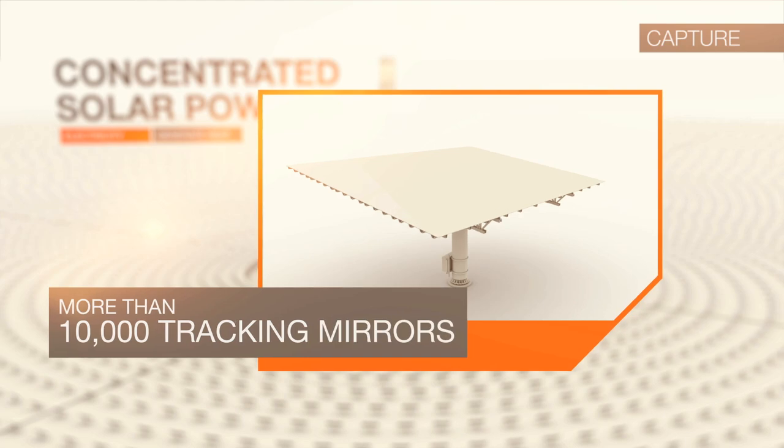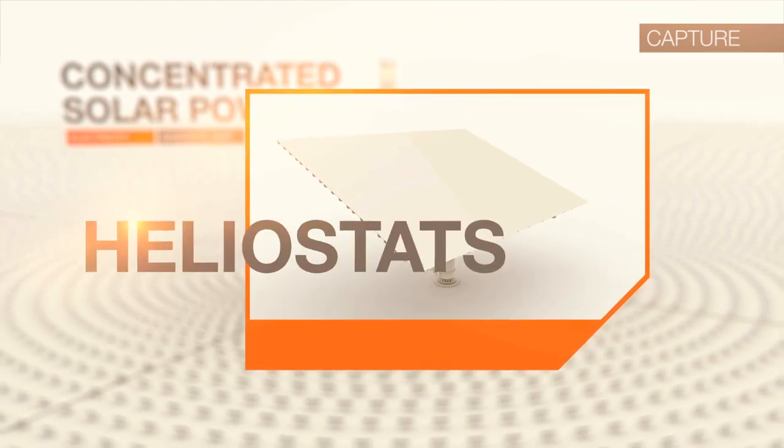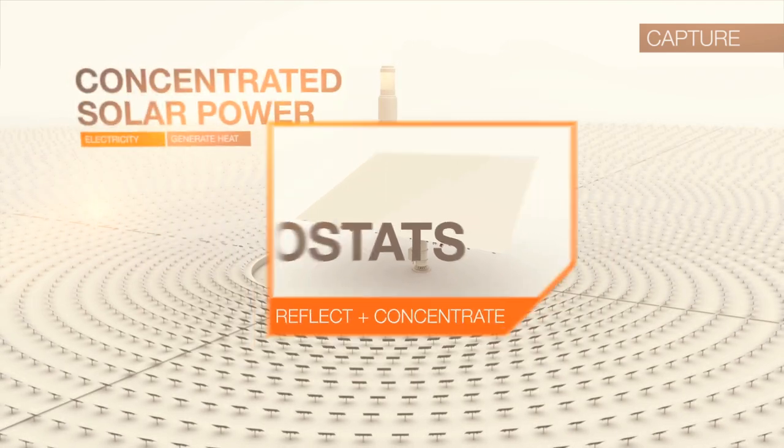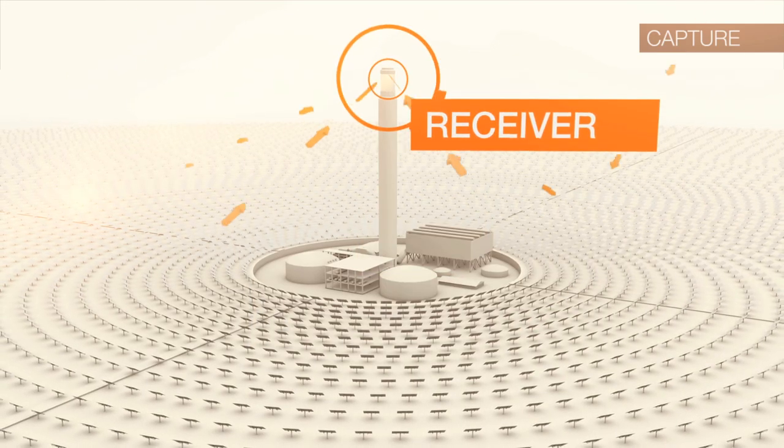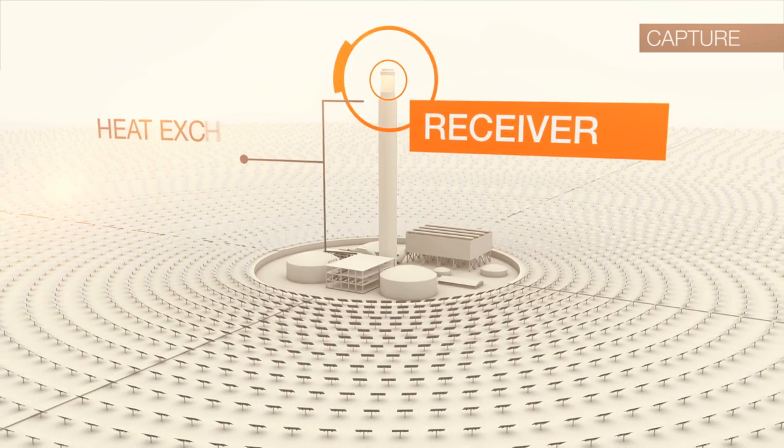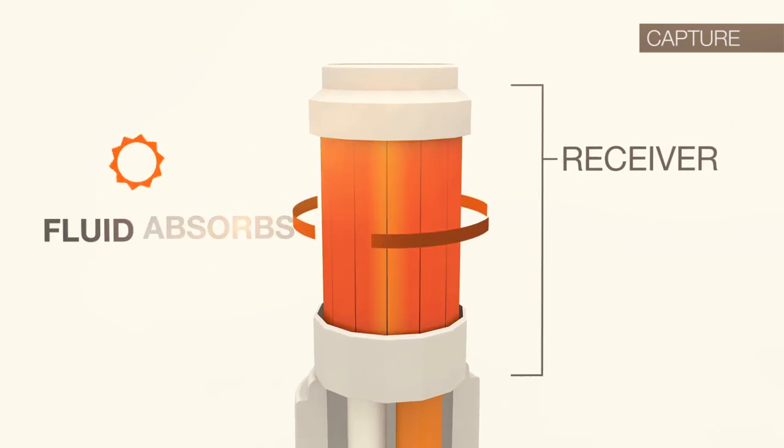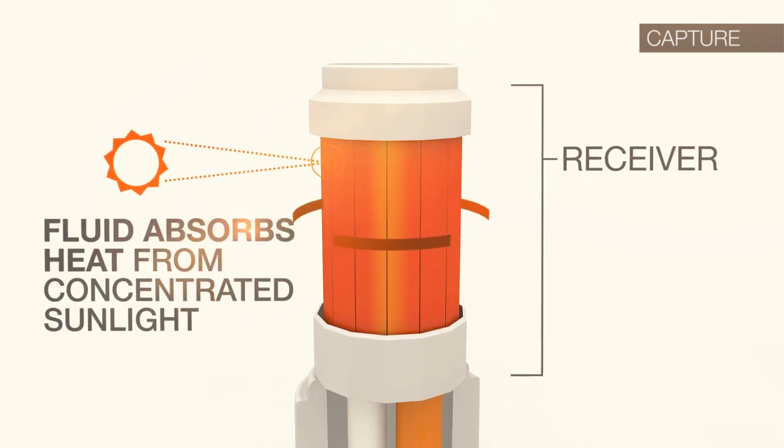More than 10,000 tracking mirrors called heliostats reside in a four square mile field where they reflect and concentrate sunlight onto a large heat exchanger called a receiver that sits atop a 550-foot tower. Within the receiver, fluid flows through the piping that forms the external walls. This fluid absorbs the heat from the concentrated sunlight.